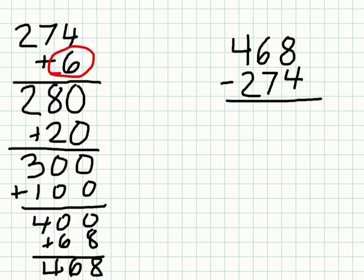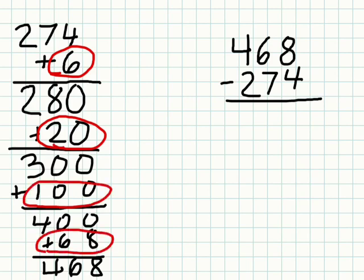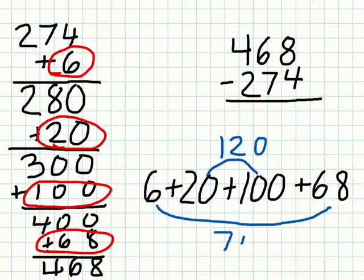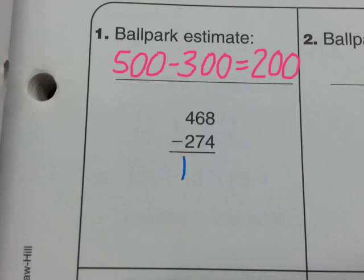Now I'm going to circle all of the numbers that I added, and I'm going to put those numbers together. And you can think about how you want to do that. I think I will put 20 and 100. I know it's 120. I'll put those together. 6 and 68 is going to give me 74. And then if I put 74 and 120 together, the answer is 194. So I can check that, and you can see that it's close to my estimate. So that must be right.